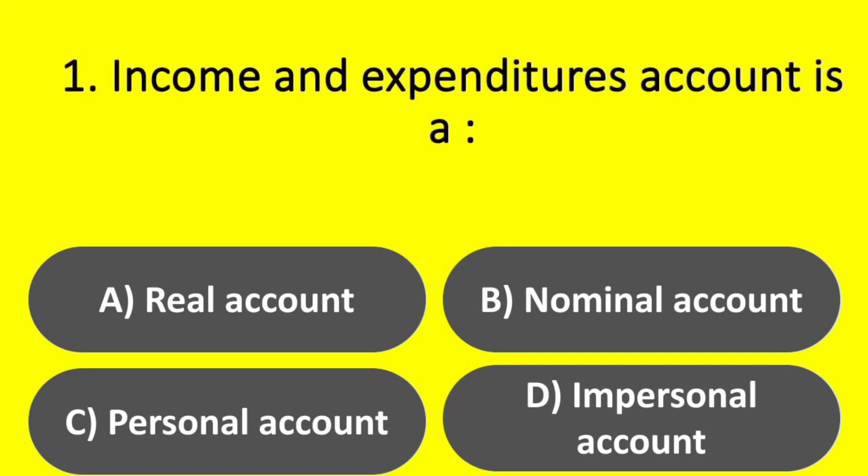Question. Income and expenditure account is a: Option A – Real account. Option B – Nominal account. Option C – Personal account. Option D – Impersonal account.